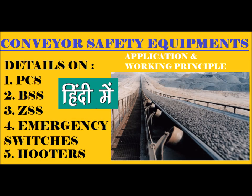Hello everyone, welcome back to my channel. In this video we will cover conveyor safety equipment. There are total 5 equipment that will remain in focus: pull cord switch (PCS), belt sway switch (BSS), zero speed switch (ZSS), and the last ones are common — emergency switch and hooters. We will focus on their application and working principle. Let's start the video.